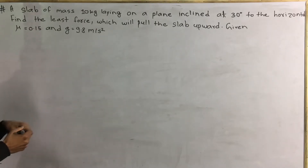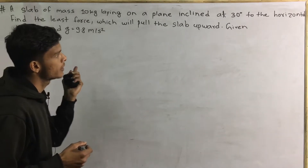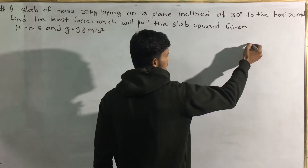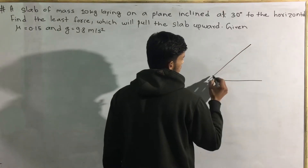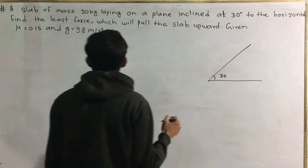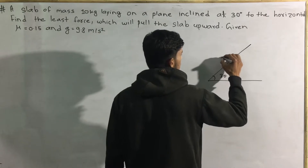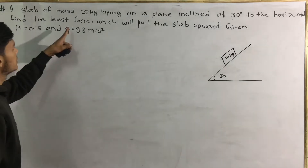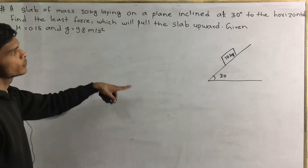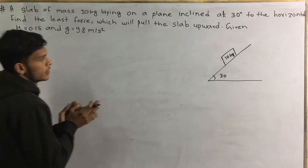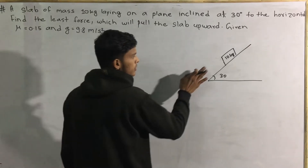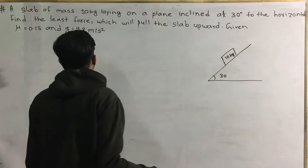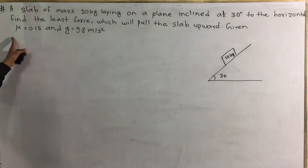A slab of mass is laying on a plane inclined at 30 degrees to the horizontal. This is the surface. The horizontal angle is 30 degrees.